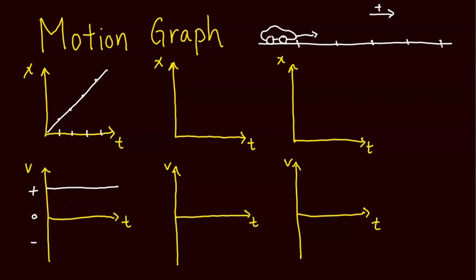Next, what if the car were moving in the negative direction — towards the left? It might start somewhere in front of the origin, moving towards it. A second later it's closer to the origin, two seconds later even closer. So we'd expect a straight line with a negative slope on the position-time graph, and given enough time it would return back to the origin.